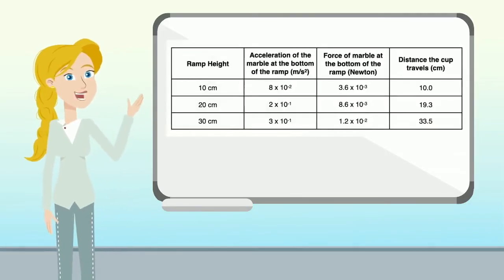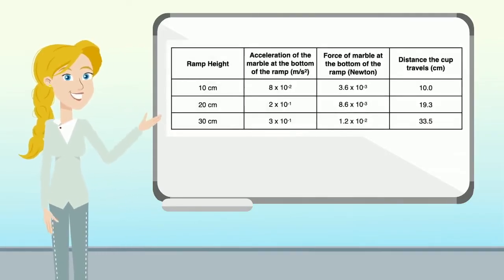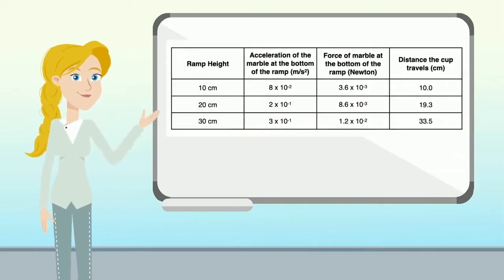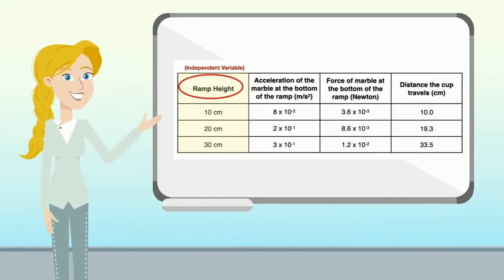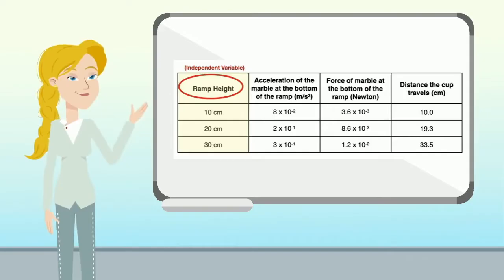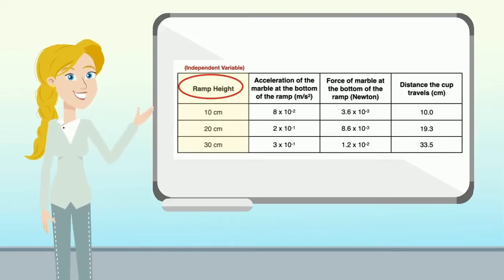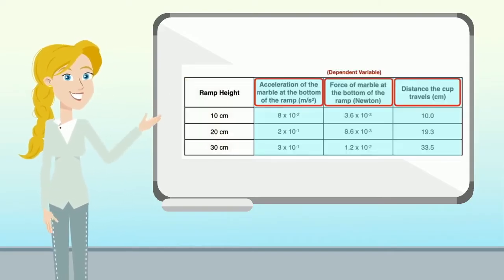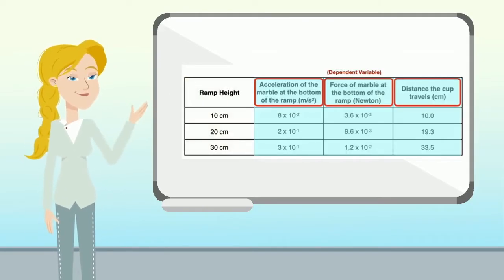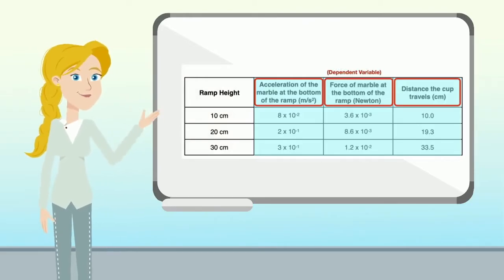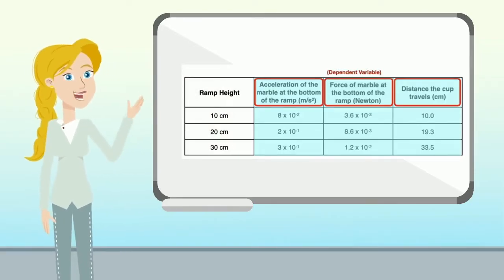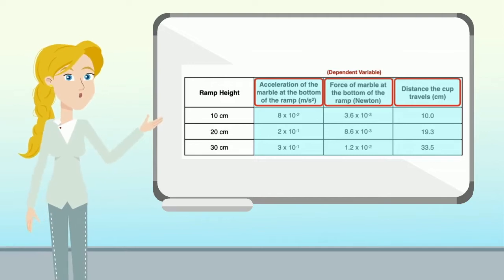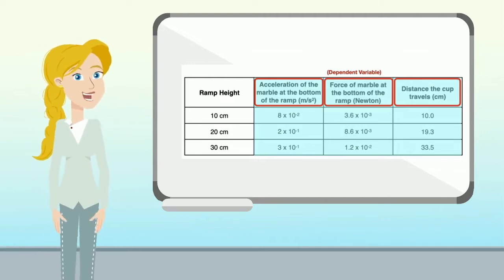Let's take a look at this data table. In the first column on the left, we have the ramp height — that's the independent variable. The other columns are the dependent variables: we have acceleration of the marble at the bottom of the ramp, force of the marble at the bottom of the ramp, and distance the cup travels.